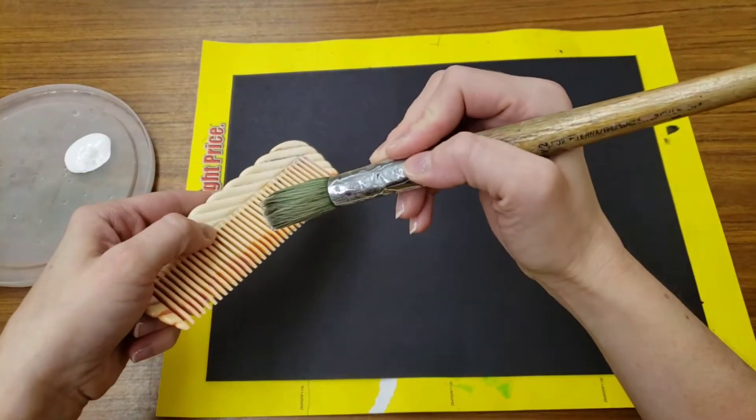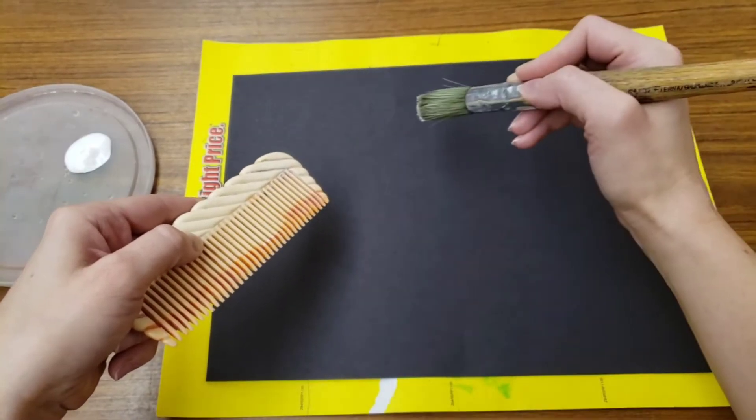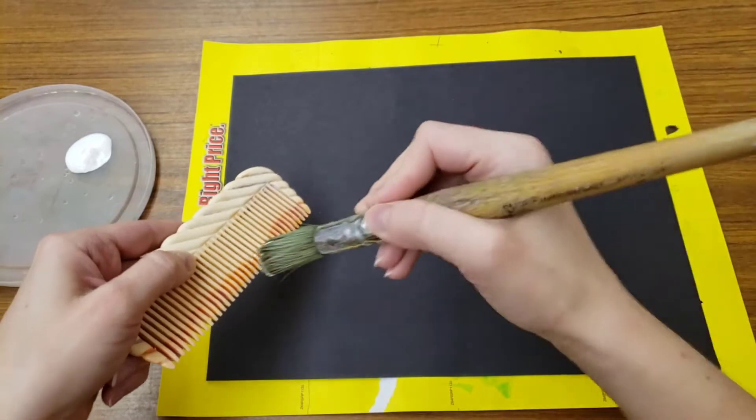and then we hold the comb over your project. You're going to take the brush, and you'll be brushing the comb, but you have to press down and away from you. It needs to go towards your paper.